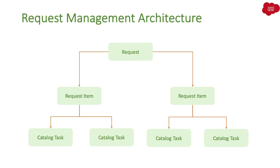Those two request item records will follow different workflows. To complete the orders for two products, there will be tasks assigned to different teams — maybe the logistics team, the processing team, or the team acknowledging the order. Both workflows can work in parallel, but the stages will not necessarily be the same. One product might be delivered in three days, another in one day, depending on the workflow. For each request item we have different catalog tasks.